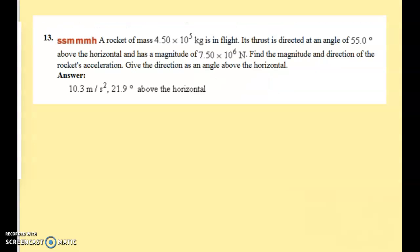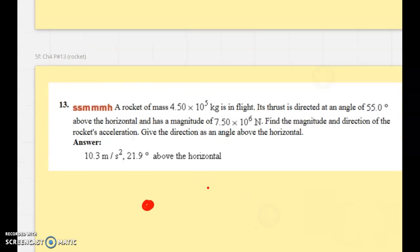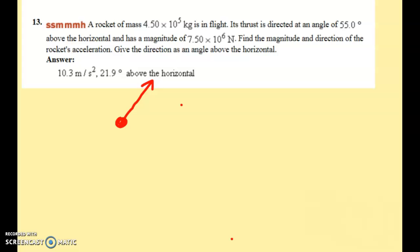On number 13, we have a rocket with a given mass in flight. We'll draw a free body diagram for that thing right here. The thrust is directed at an angle of 55 degrees above the horizontal and has a magnitude of that. We'll say the thrust is going to look something like this, FT, force of thrust. Find the magnitude and direction of the acceleration. Now, the other thing that I think would be on here is the force of gravity. I didn't put that on the last example, but I am going to put it on this example. It's a little bit smaller. Imagine multiplying this mass by approximately 10 would give me about 4.5 times 10 to the sixth. 9.8 would be a little bit smaller, then comparing with 7.5 times 10 to the sixth, it will be a little bit smaller.